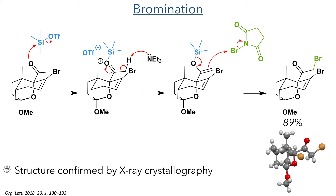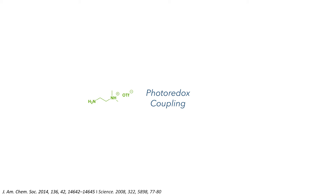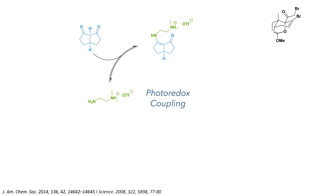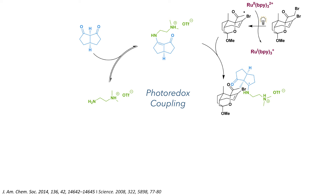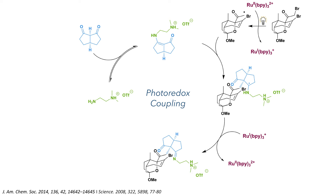With the bromide now installed, the authors proceeded to the photoredox coupling. This reaction starts with a diamine triflate salt which reacts with a symmetrical diketone to form an enamine. The bromide then reacts with a tris-bipyridyl ruthenium(II) complex under irradiation from a fluorescent light bulb to form a radical upon abstraction of the bromide, which reduces the ruthenium complex to ruthenium(I). This radical then reacts with the enamine to form a new carbon-carbon bond and leaves a radical on the carbon bearing the nitrogen species. Further reaction with the ruthenium(I) species forms an imine and re-oxidizes the ruthenium complex back to ruthenium(II). This imine is hydrolyzed to produce the target compound in a 70% yield.